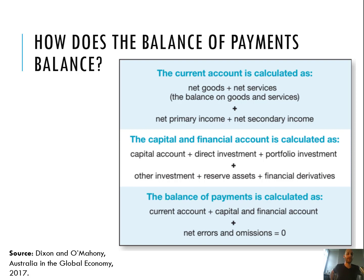To get the balance on the current account — looking at the top part of that box — we need net goods and net services. That gives us BOGS, and then we add to that NPY and net secondary income. That will give us the balance on the current account.